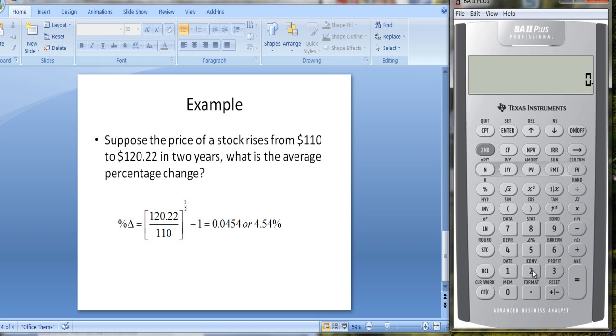We could also do this for two periods. Here we can compute the interest rate: 4.54% for two periods. So here are a couple of ways you can calculate percentage change quite easily, and it comes in handy because oftentimes we need to know what's